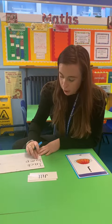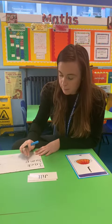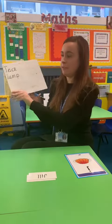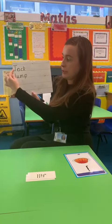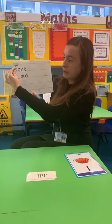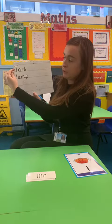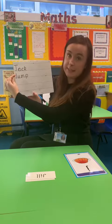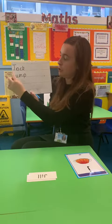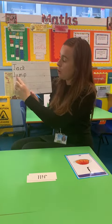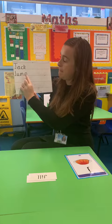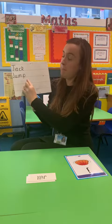J, U, M, P. Now I don't need a capital letter for this word. Can you see how this is the capital J and then this is the lowercase J? So we've got J, U, M, P — jump.